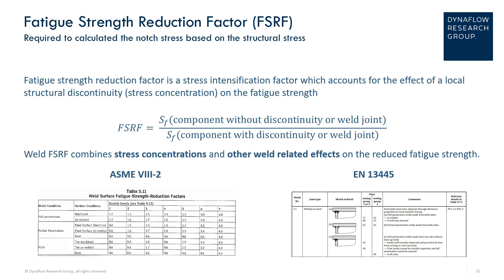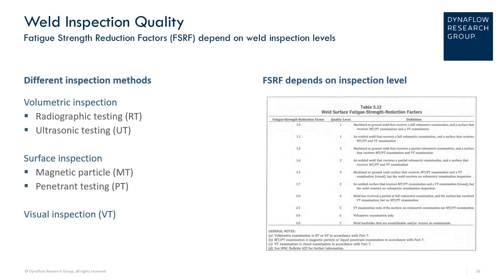In the EN code, it specifies different classes which relate to the reduced fatigue strength of a weld. In the figure we see it ranging between class 40 to class 80 for a similar type of weld. These fatigue strength reduction factors depend on weld inspection levels.